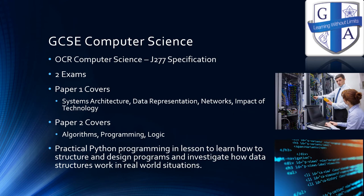For GCSE computer science, we build again on what we do in Years 8 and 9, and we follow the OCR J277 specification for this. There are two exams: paper one covers the theory side of computing, such as how to create a system, how data is represented, and how networks work. Paper two covers the programming theory — how to write an algorithm, how to read an algorithm, how to write a program, how to structure a program, and how to follow logic through the use of things like truth tables. We also do a lot of practical Python programming in lessons to make sure that your child is well prepared for designing programs and investigating how things work in a real-world situation.